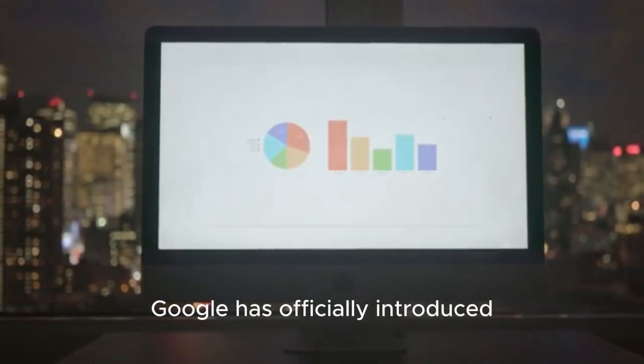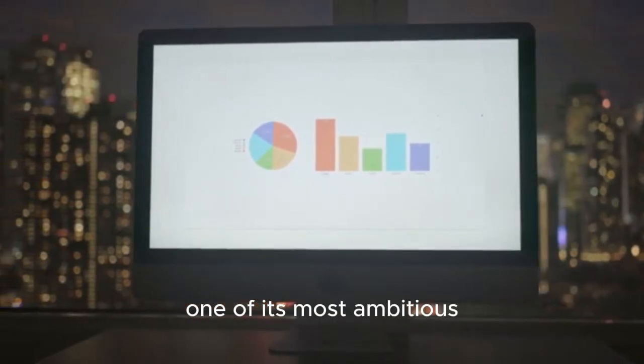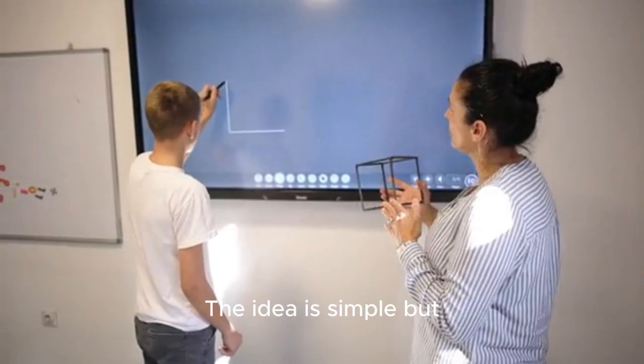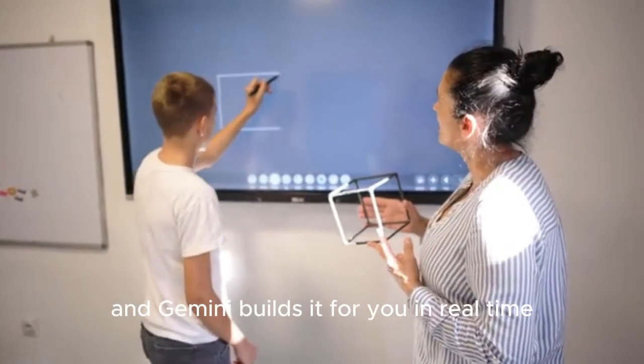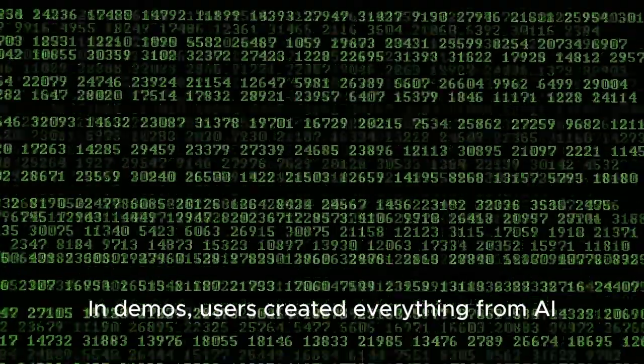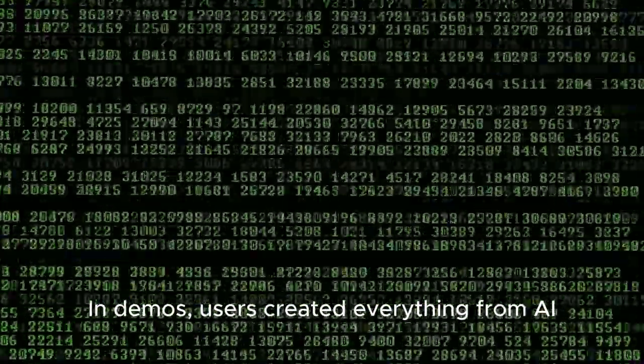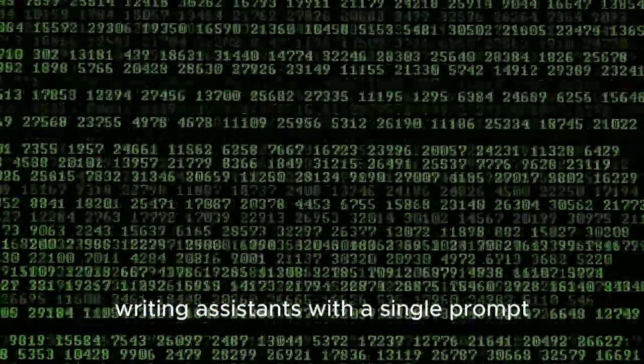Google has officially introduced Vibe Coding inside AI Studio, one of its most ambitious Gemini-powered updates yet. The idea is simple but revolutionary. Describe the app you want, and Gemini builds it for you in real-time, no setup or coding required. In demos, users created everything from AI video generators to image editors and writing assistants with a single prompt.